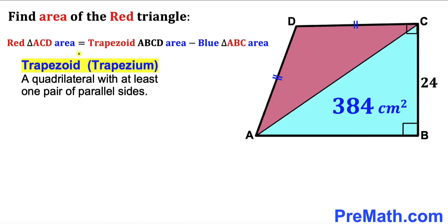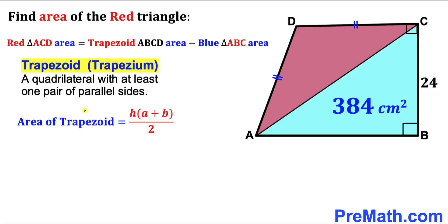Let's recall the definition of a trapezoid — sometimes called a trapezium — a quadrilateral with at least one pair of parallel sides. The area formula is: Area = H × (A + B) / 2, where in our case the height H is 24 cm. Our task is now to calculate the two bases A and B.